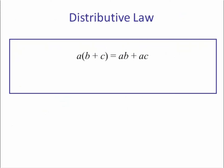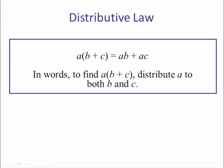Here's the distributive law, sometimes called the distributive property. This is where we have a quantity a times a sum — in this case b plus c. So it's a times b plus a times c. In words, we find a times the quantity b plus c, and distribute a to both b and c.